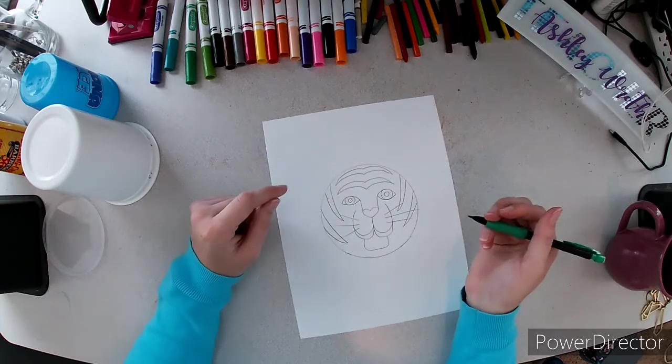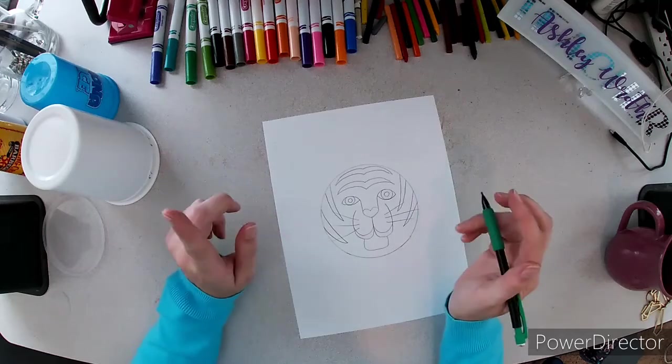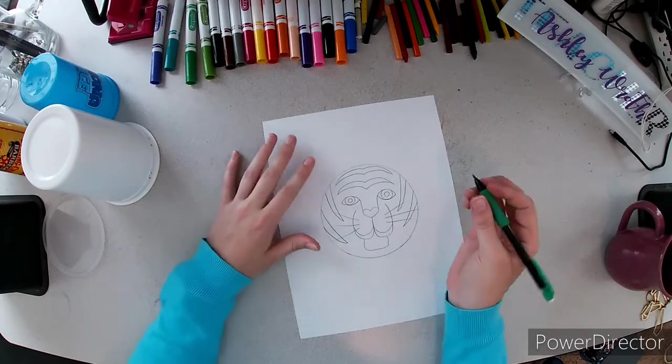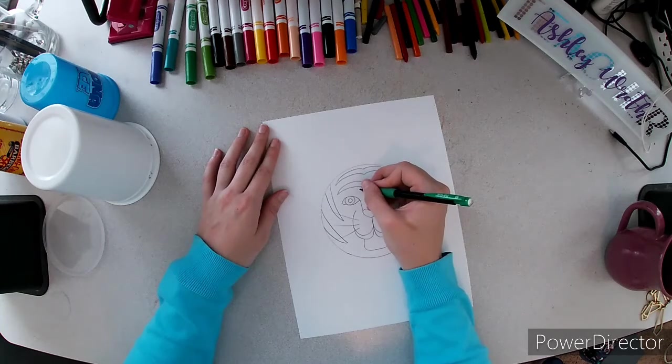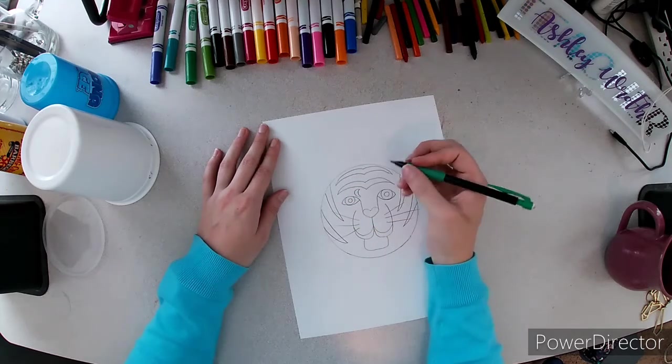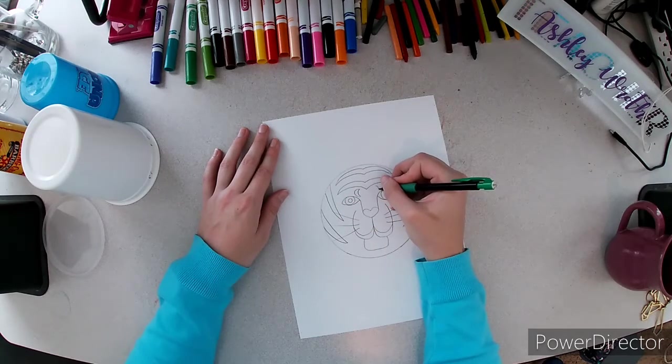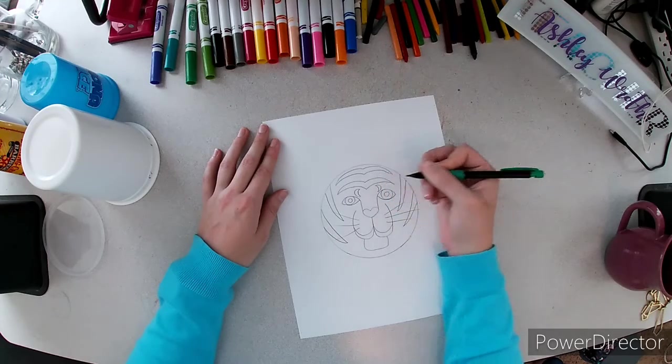Now tigers have kind of funny eyebrows because the pattern of the stripes on their forehead kind of look like its eyebrows but it really isn't. So I'm going to show you. It's a C shape and then a matching one to make it look like a moon. And the same thing on the other side. A C right here and then a matching one to make it look like a moon.